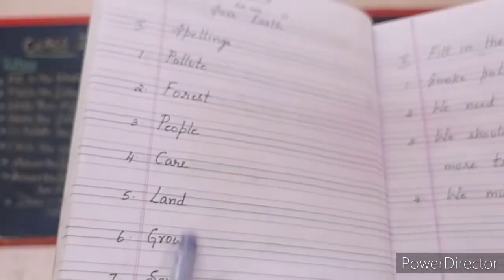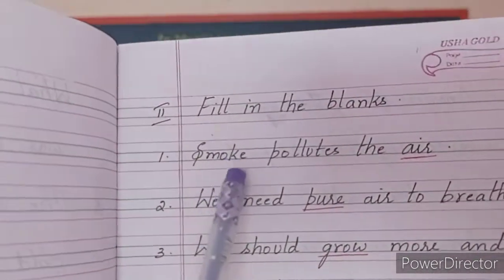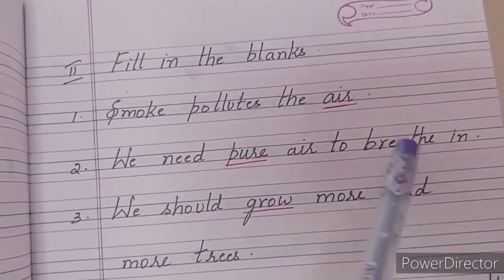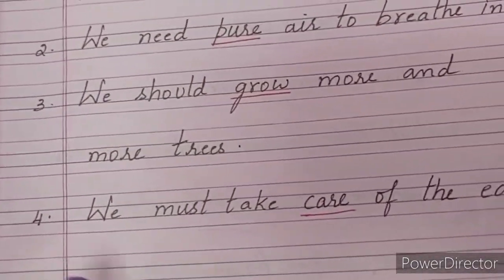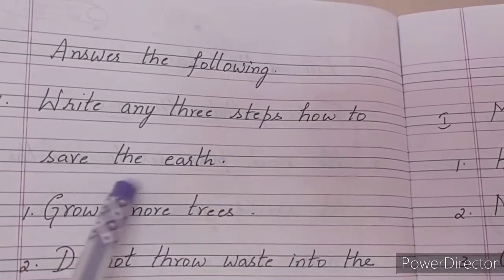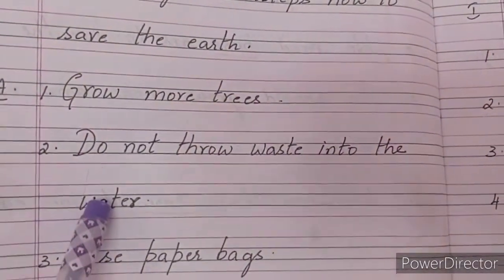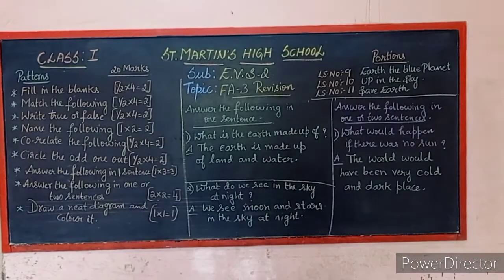Lesson 11 — Save Earth: revise all spellings. Fill in the blanks: smoke pollutes the air; we need pure air to breathe in; we should grow more and more trees; we must take care of the earth. Answer the following — three steps to save the earth: grow more trees, do not throw waste into the water, use paper bags.